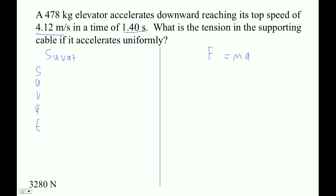Okay, accelerates downward reaching a top speed of 4.12. So let's assume that the initial velocity was 0. The final velocity is negative 4.12. Time is equal to 1.40 seconds. That's meters per second.